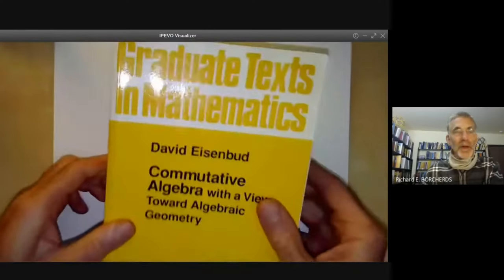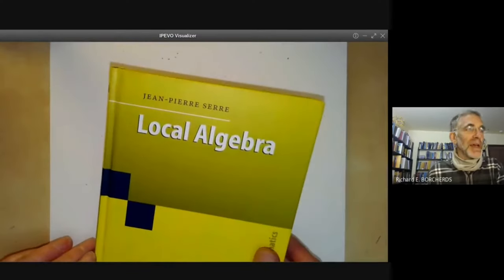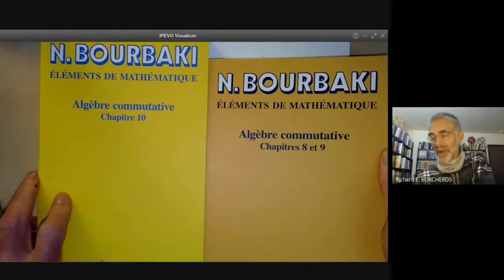You would think that Fields Medalist Richard Borcherds would need only a single book to understand commutative algebra, but instead, he had to learn about it not from one source, not from two, not three, but eight. This video itself took me two months to write, and even here, I'm barely scratching the surface.